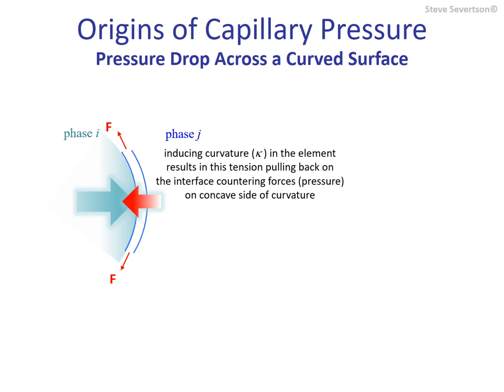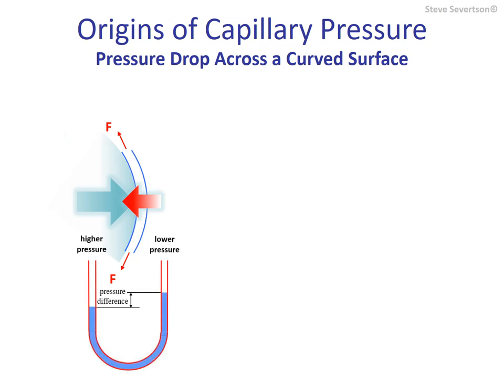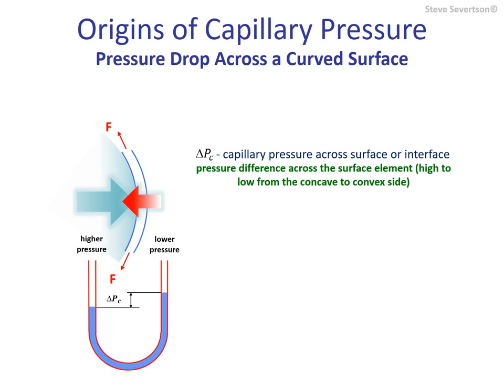As a result, the pressure on the concave side of the interface must be higher than that on the convex side to maintain equilibrium. This counter pressure, due to the surface tension, is known as capillary pressure, denoted here as delta p subscript c. Thus, capillary pressure quantifies a pressure gradient across a surface or interface which is positive, high to low, from the concave side to the convex side.